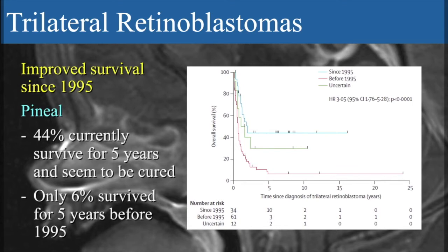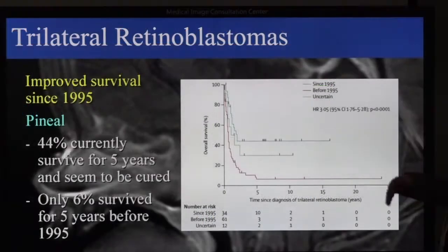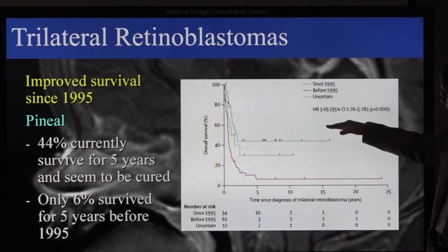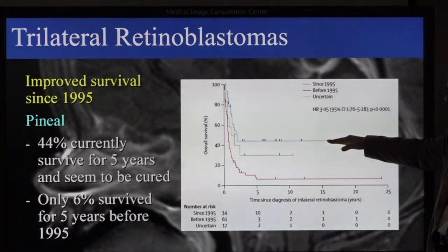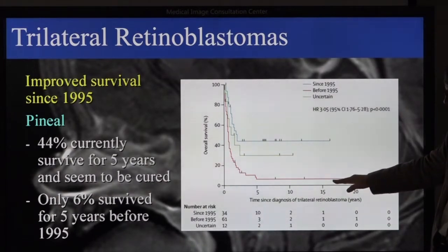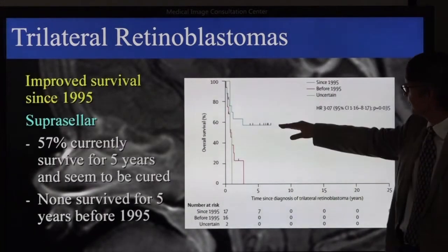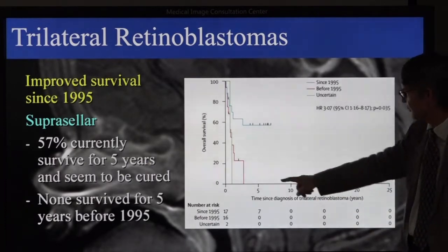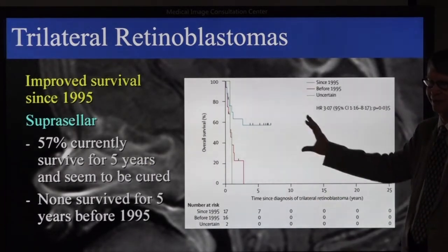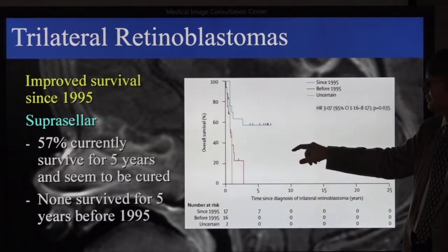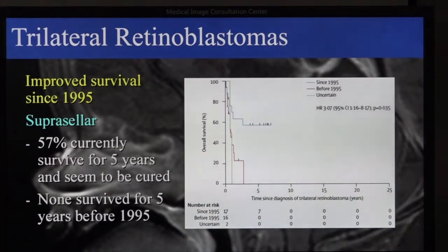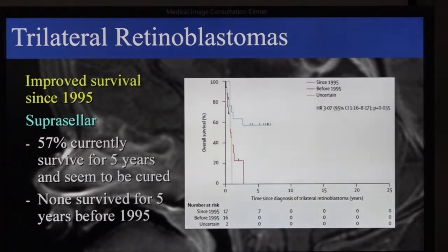We can divide these by location. We have 44% survival from pineal tumors at five years, compared to only 6% before 1995. For the suprasellar tumors, we now have 57% survival where it was nil before. So the treatment — the higher-dose chemotherapy — really made a difference. This may also indicate that because suprasellar tumors develop earlier and are more reminiscent of the original retinal tumor, they also have a more favorable response to chemotherapy.